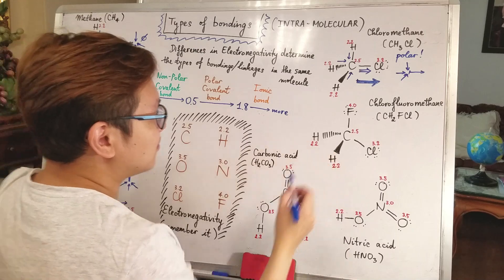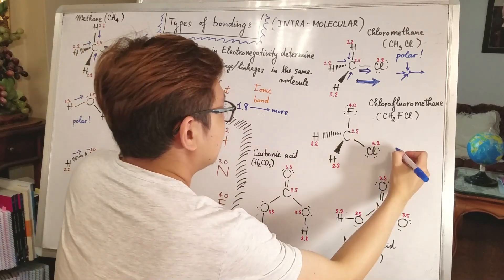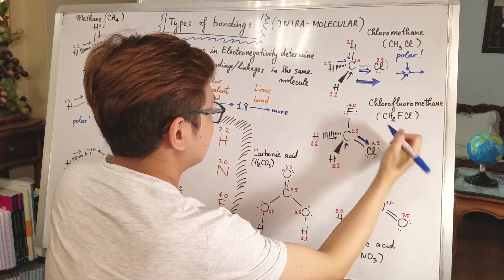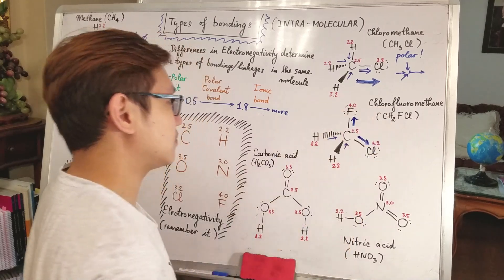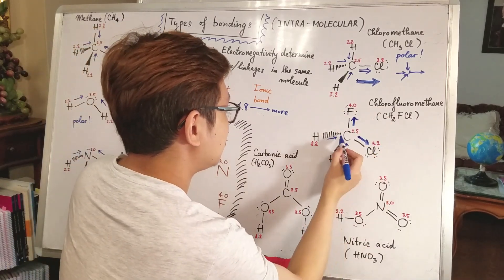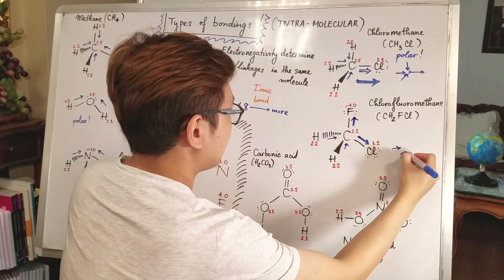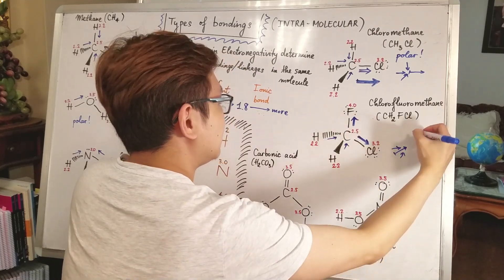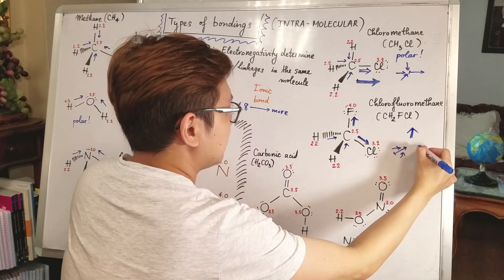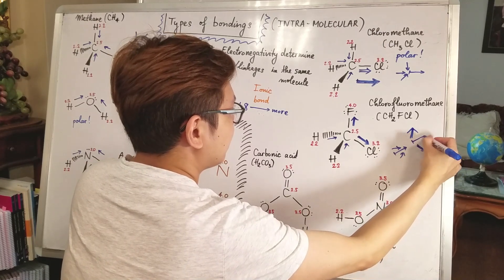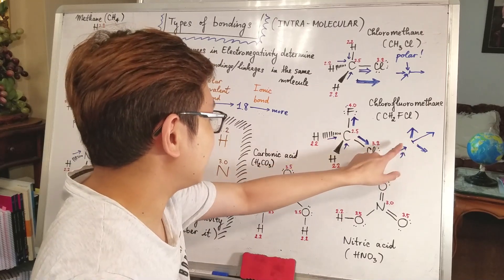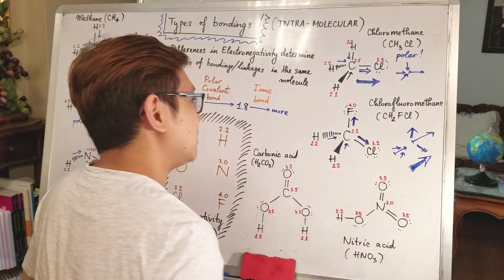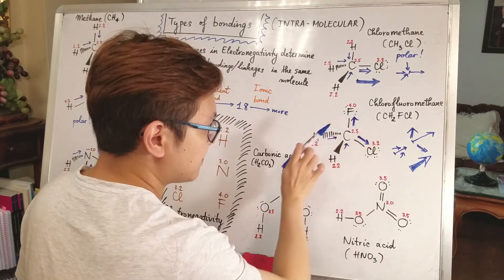Now try chlorofluoromethane (CH2FCl). The two C–H bonds contribute a vector sum pointing one way, while the fluorine and chlorine each contribute vectors pointing another way, producing a vector sum in that direction. The two resulting vector sums — from the H side and from the F/Cl side — combine to give something larger. As a result, this molecule is polar.